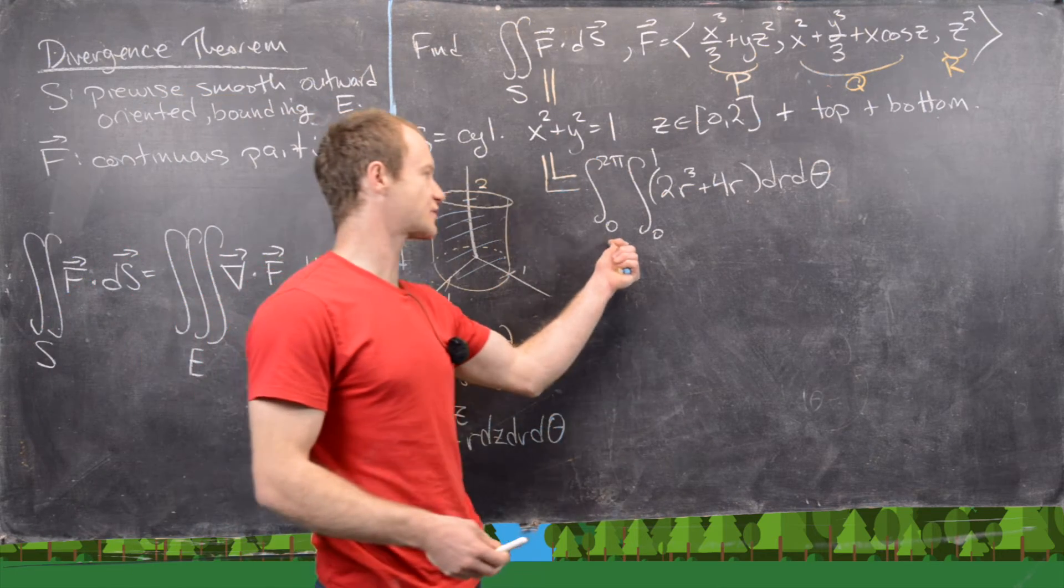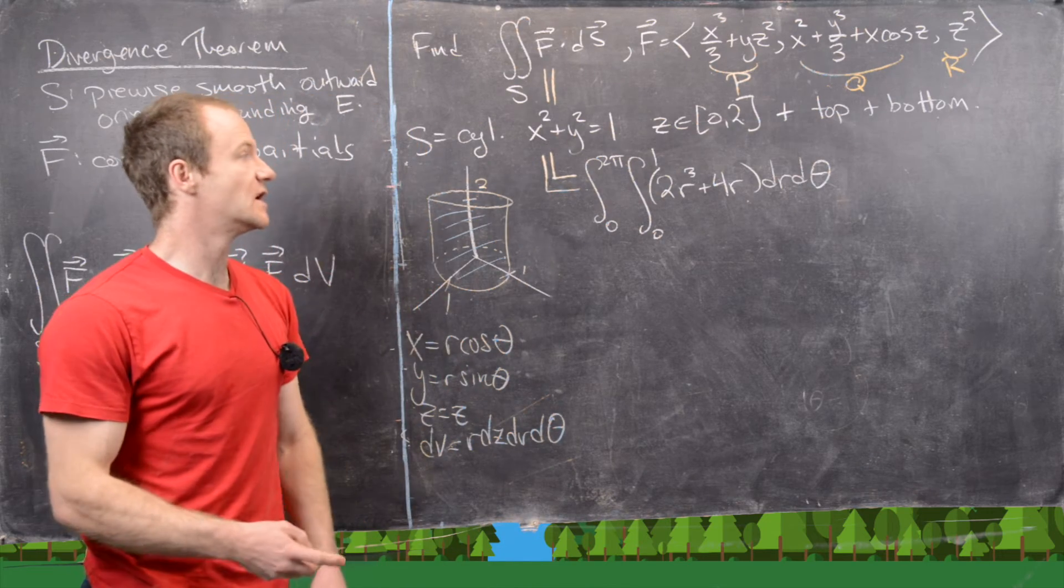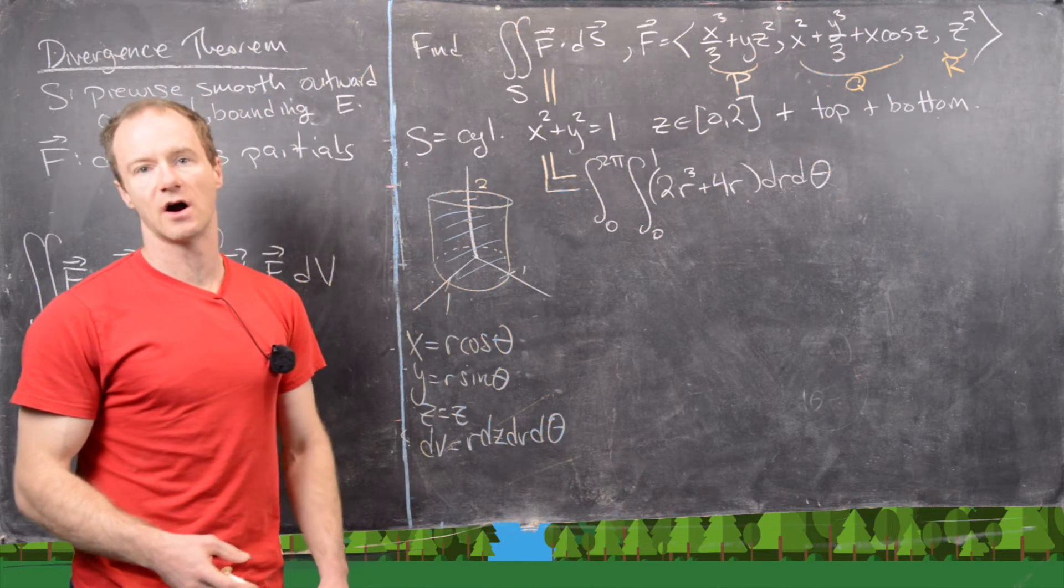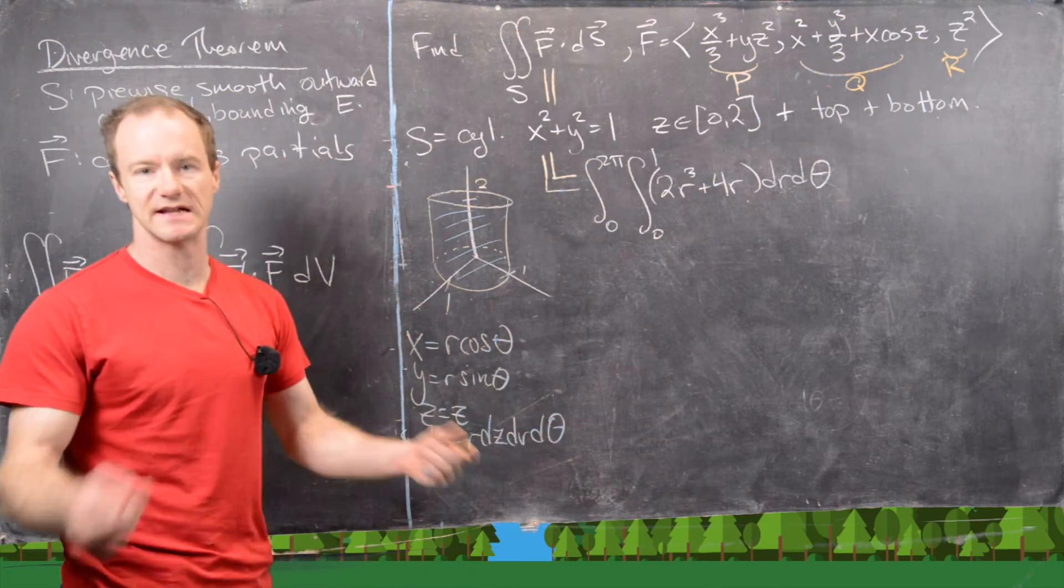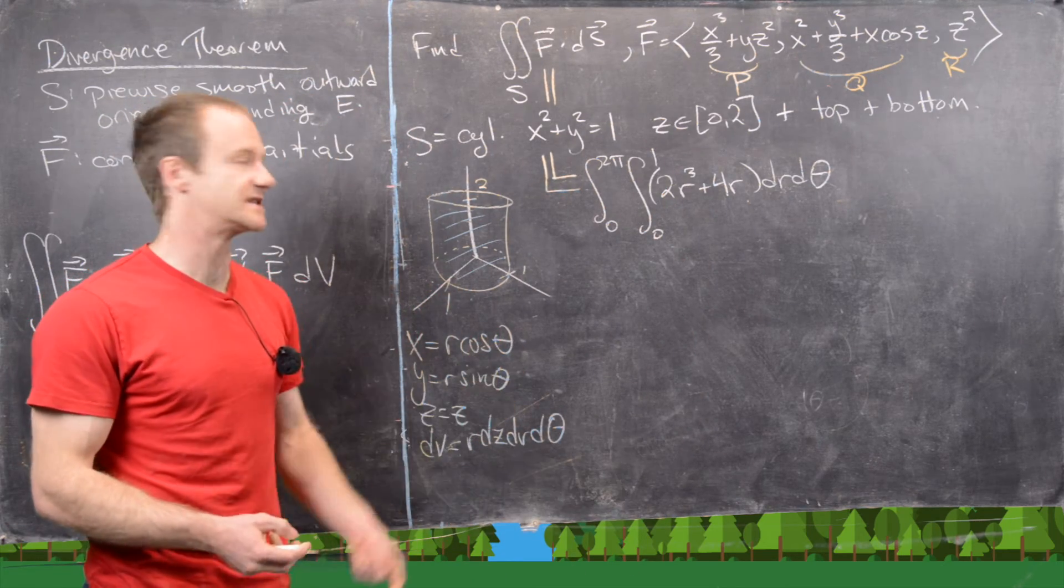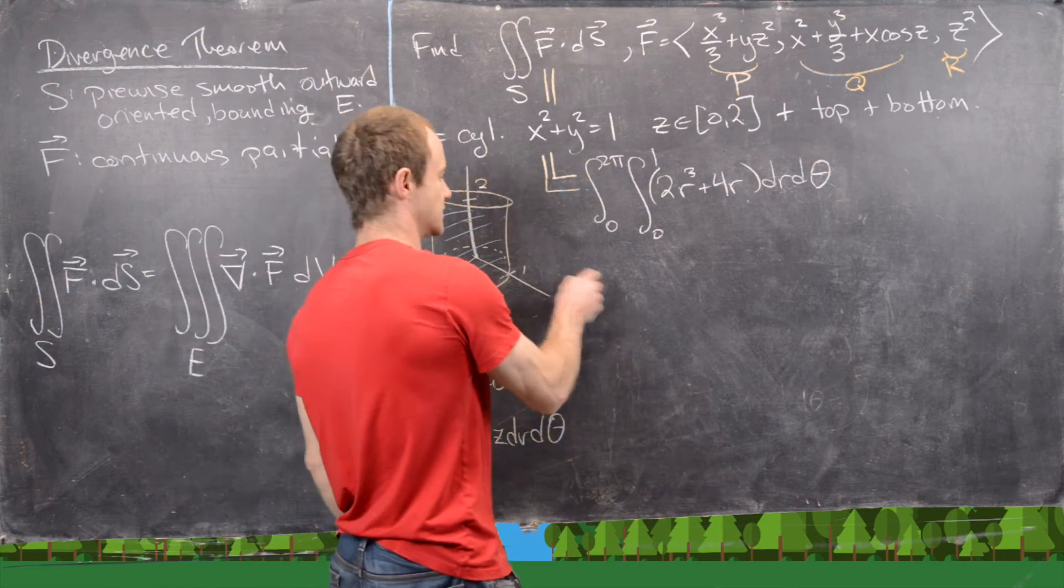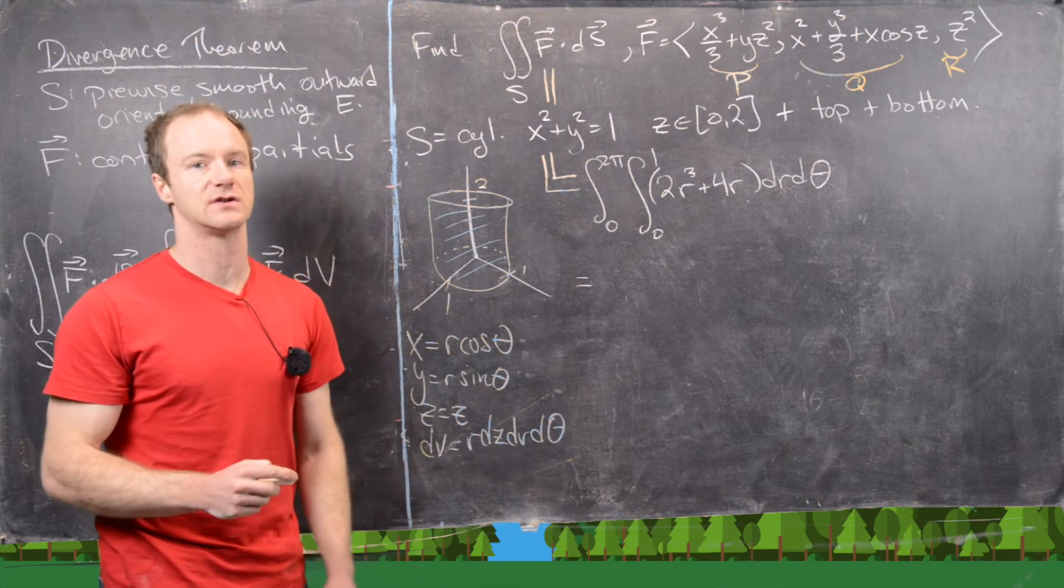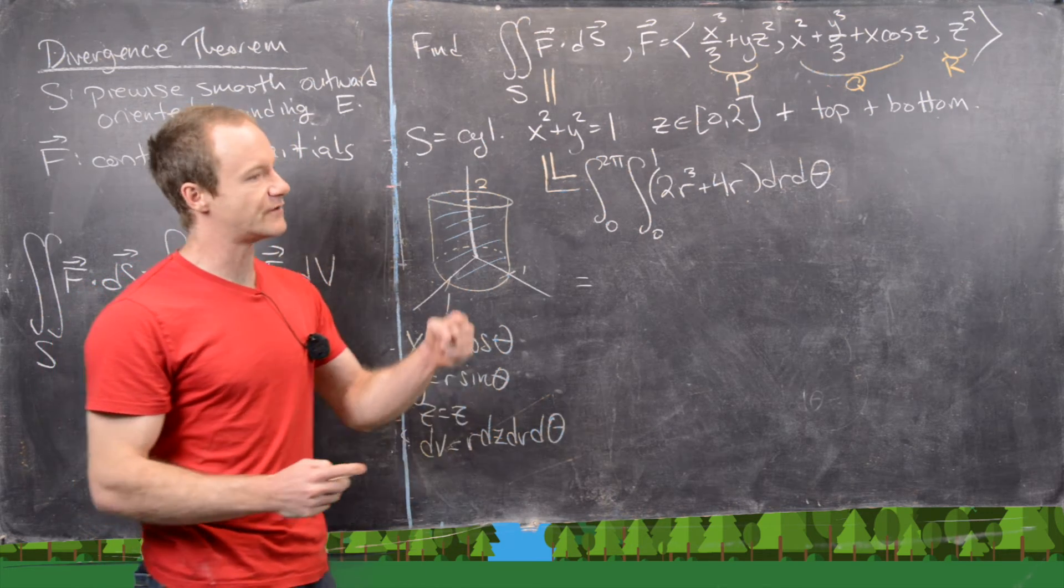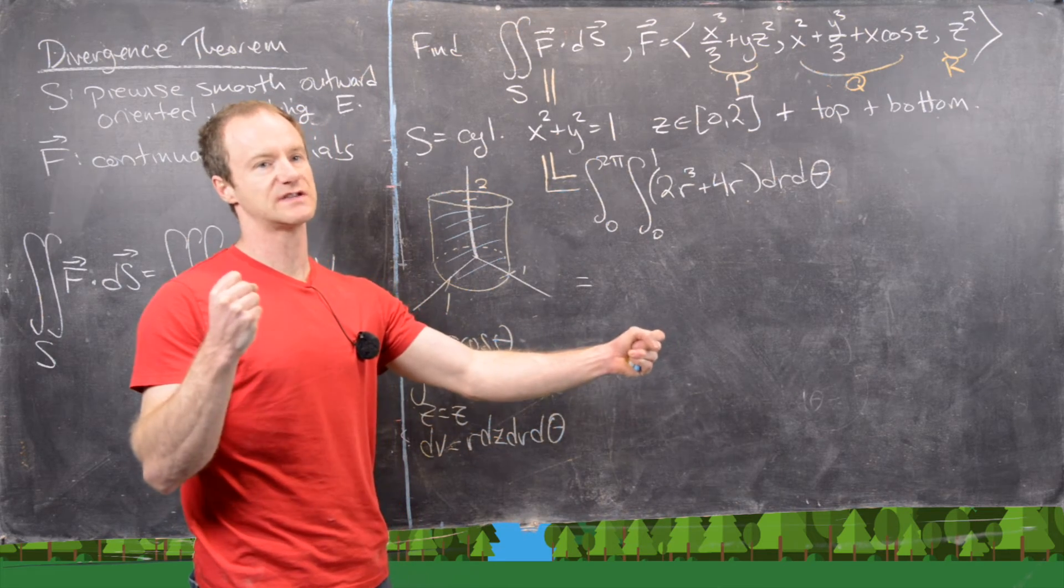We left off at this point, we've got this integral from 0 to 2pi, 0 to 1, 2r cubed plus 4r dr d theta, and now notice we've got a function of r times a function of theta. It's a trivial function of theta, but it still is a function of theta, which allows us to factor that into two single integrals. So this is a great trick, which happens a lot with cylindrical and spherical coordinates.